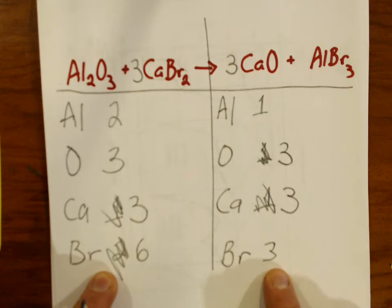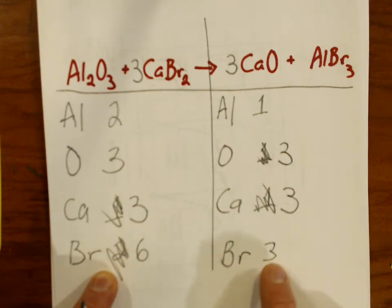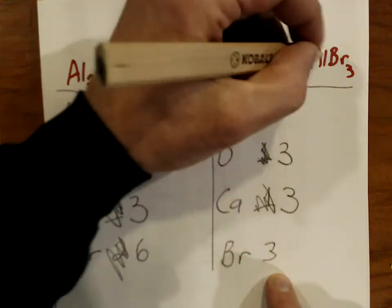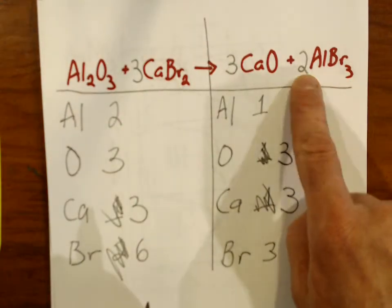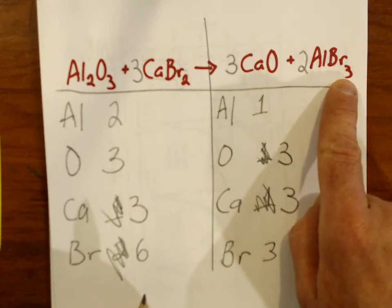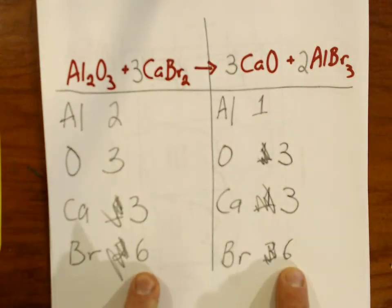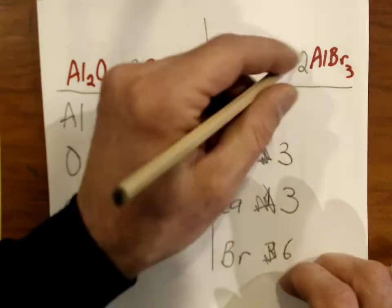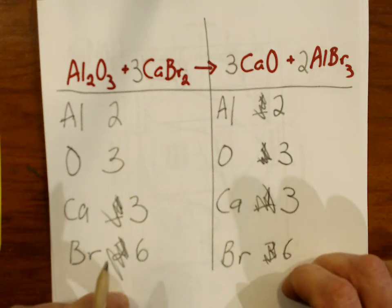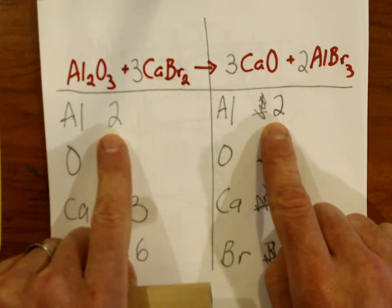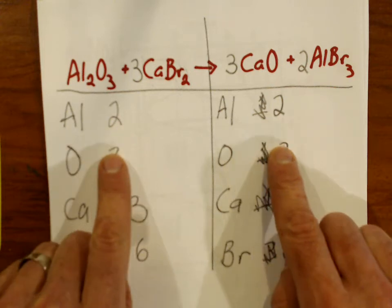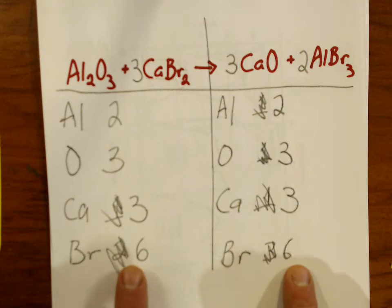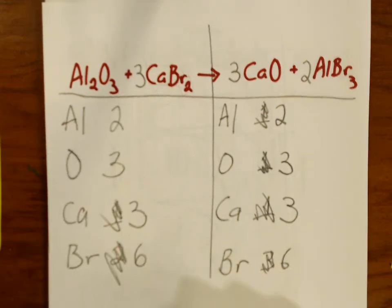I see something here in bromine: there are six on the reactant side, and the product side only has three — but three can easily multiply by two to become six. So I'll find bromine's compound and put a big two in front of it. Now there are six bromines on this side of the equation. That two also affects the number of aluminum atoms — that makes two aluminum atoms there. And look at that — aluminum is now balanced too. Double-checking: every element has an equal number of atoms on the reactant side as on the product side. This one is balanced.